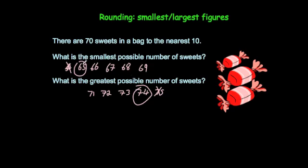So 65 is the smallest possible number of sweets in the bag and the greatest possible number of sweets in the bag would be 74.